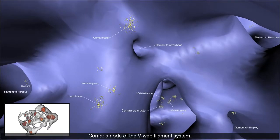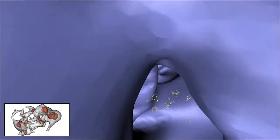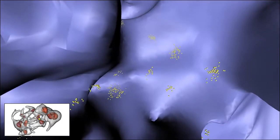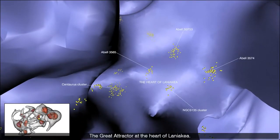Coma, a node of the V-web filament system. The Great Attractor at the heart of Laniakea.